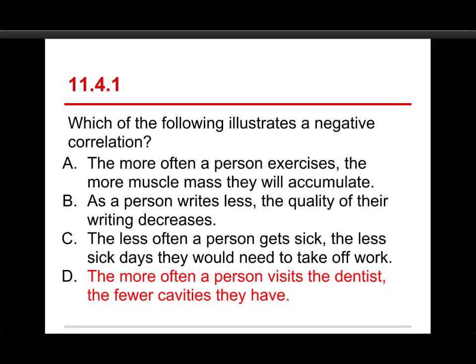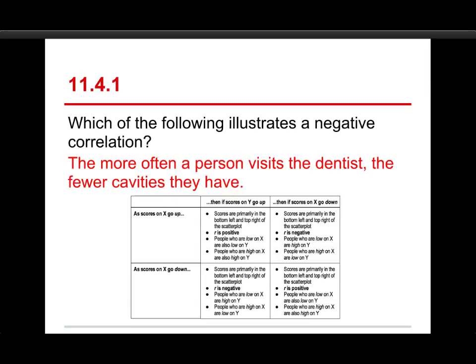And then same thing with C, less of one, less of the other. It's a positive correlation even though it's worded in a sort of a negative sense. It's just low goes with low and high goes with high. And in fact, I'm just going to refer you to the table that's in the text that talks about as scores on X go up or down and scores on Y go up and down, and it talks about how it's shaped, whether it's positive and who goes with whom.